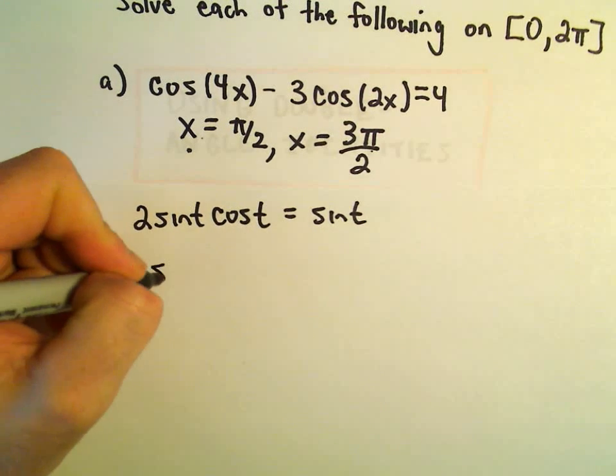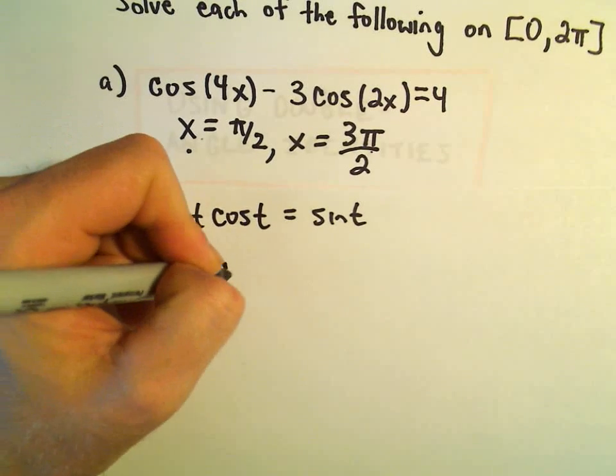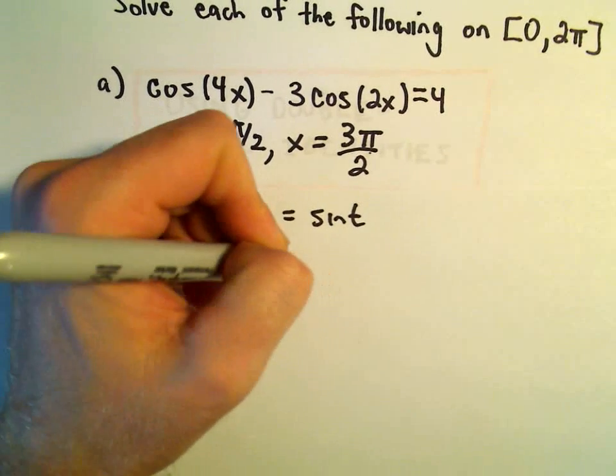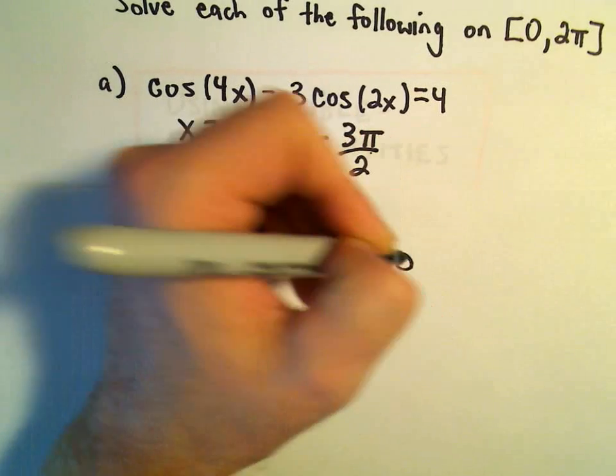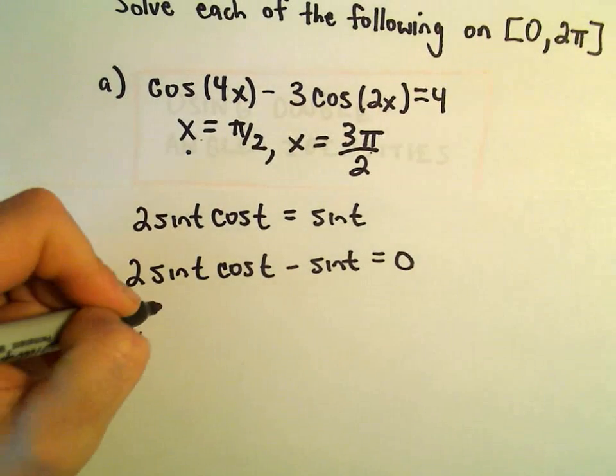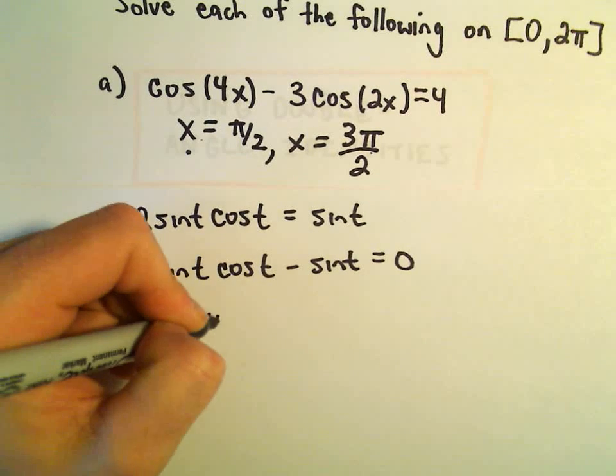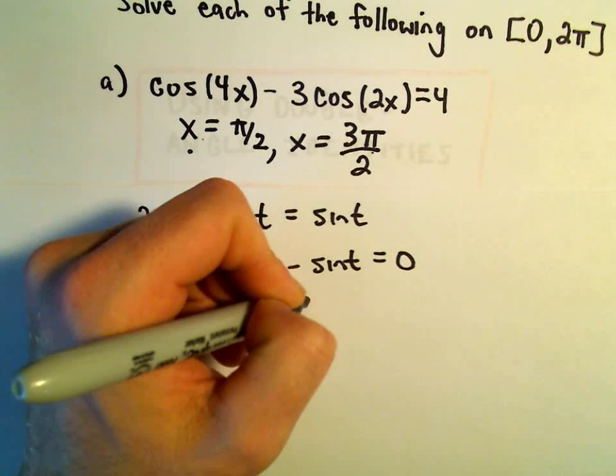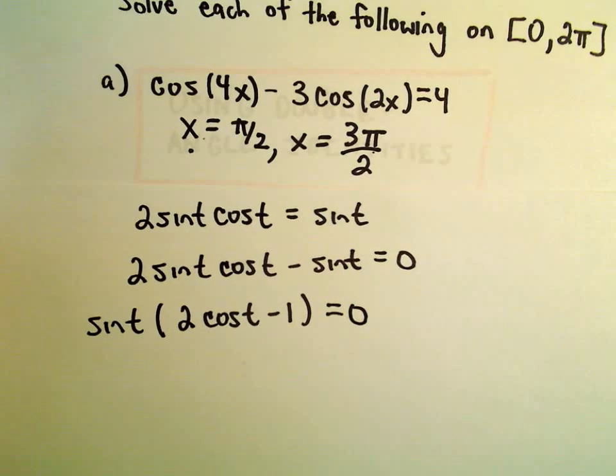So what we're going to do is we're simply going to subtract sine t from both sides. Set that equal to 0. And now we can factor the sine of t out. That'll leave us with 2 cosine t minus 1 equals 0.